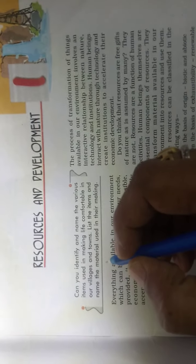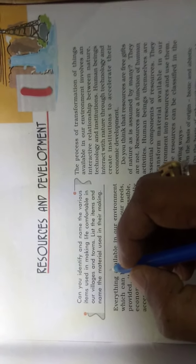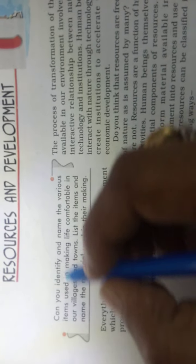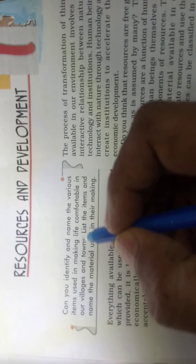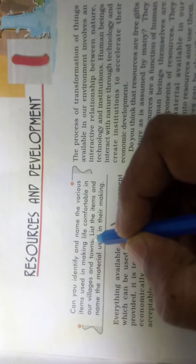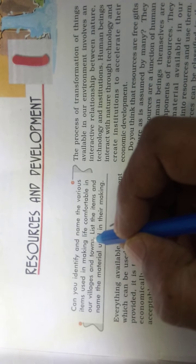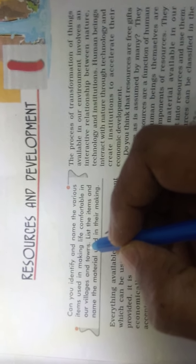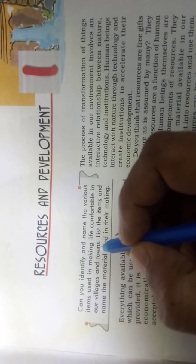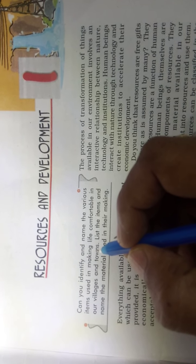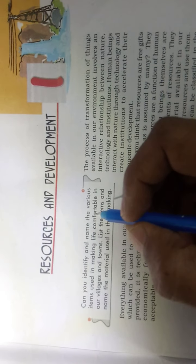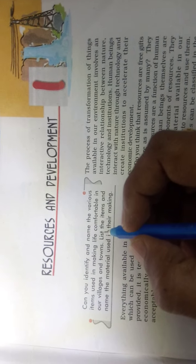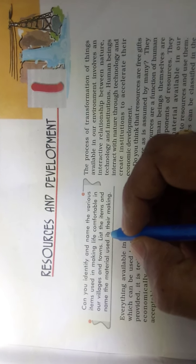Good morning students. Today I am going to explain the lesson resources and development. Can you identify and name the various items used in making life comfortable in our villages and towns? It is very simple — you can list those items which people living in villages and towns use to make their life comfortable, using various types of resources such as natural resources. For example, in villages people use forest products and agricultural products.